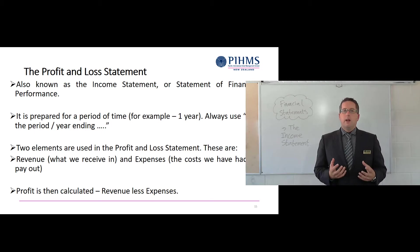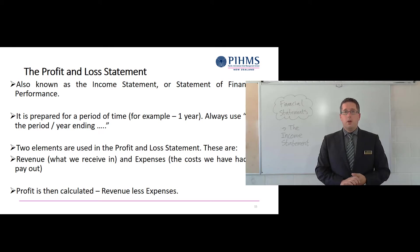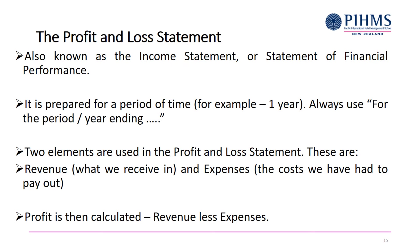The income statement calculates profit for the year or the period you're looking at. It is prepared for a period of time — for example, it might be one year or one month. We always use the timing 'for the period' or 'for the year ending' something, like the 31st of December or 31st of March for a balance date or tax year.